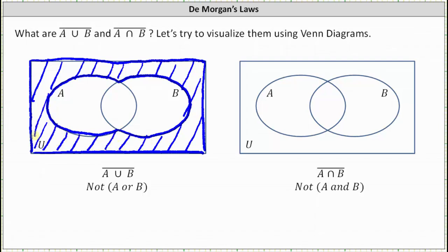Now let's consider the complement of the intersection of A and B, which is the same as not (A and B). Let's first consider A intersect B in the Venn diagram. This would be the overlapping region of A and B, inside this region here. So the complement of the intersection of A and B would be outside this region, meaning this region here.